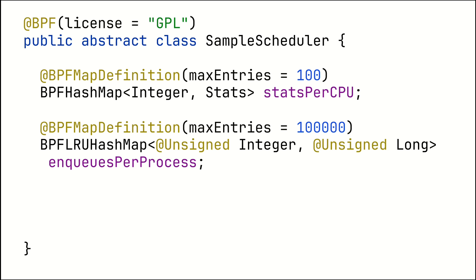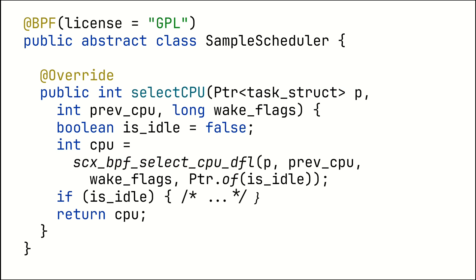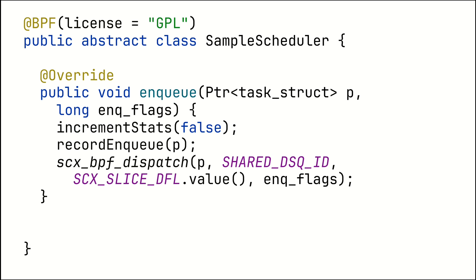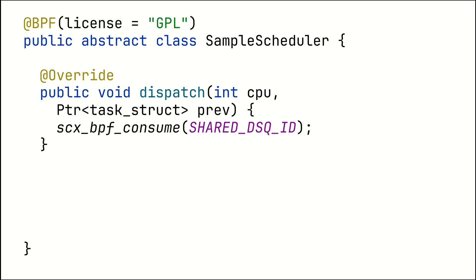We also want to define some eBPF maps for statistics — these are the statistics you saw printed on the command line. Then we want to select the CPUs for every task. This is done by internal methods, but usually what one would do is check: is the CPU that was selected idle, so it's currently not executing anything? If yes, then we can directly dispatch the process onto the CPU and take the fast track. We also handle the case where a process is enqueued and wants to run — we increment some stats, record the enqueue to log some information, and then dispatch it to our queue that we created before.